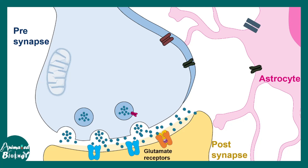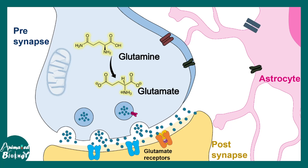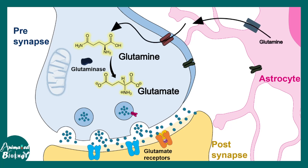When the action potential reaches the nerve terminal, there would be release of neurotransmitter into the synaptic cleft, which would bind to the glutamatergic receptors on the post-synapse. Since this is a glutamatergic synapse, the neurotransmitter is glutamate and the post-synaptic receptors are glutamate receptors. Glutamate is synthesized from glutamine in the neurons by the enzyme glutaminase. The glutamine actually comes from the astrocyte — it is taken up by the neuron, converted to glutamate, and loaded onto vesicles.